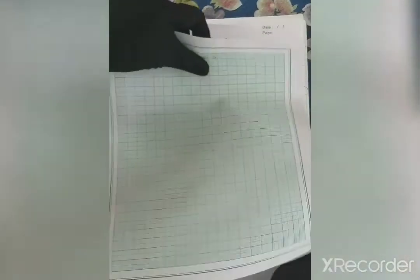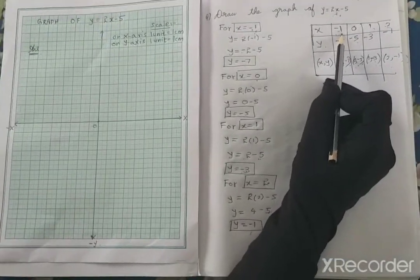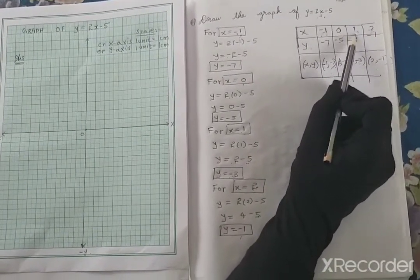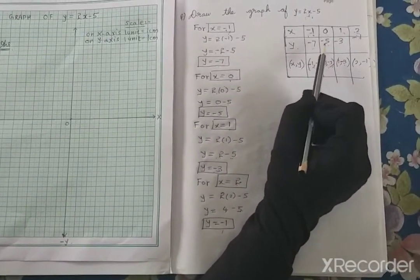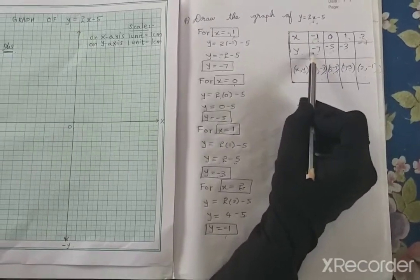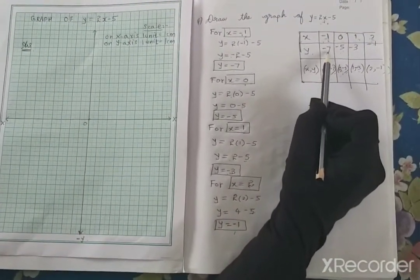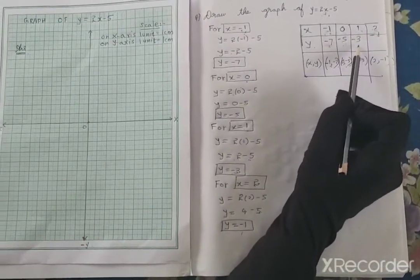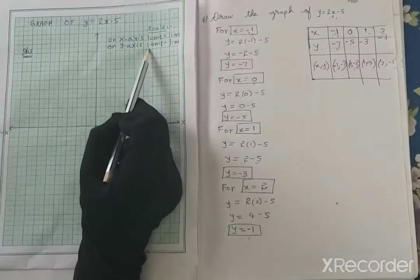How to plot the graph? I will keep these points in the middle. The x-axis points are minus 1, 0, 1, 2 — all very small points. The y-axis points are minus 7, minus 5, minus 3, minus 1 — all are negative. The greatest number is minus 7, so I need till minus 8. As the numbers are very small, I can take the scale as 1 unit equals 1 centimetre on both the x-axis and y-axis.